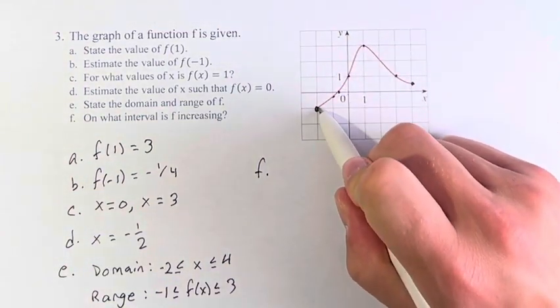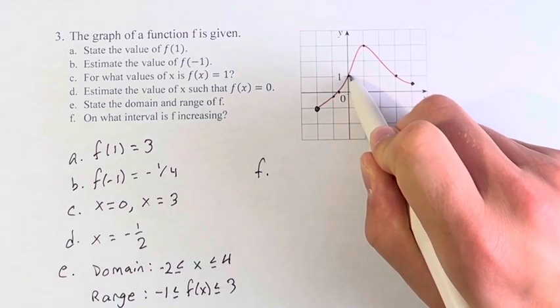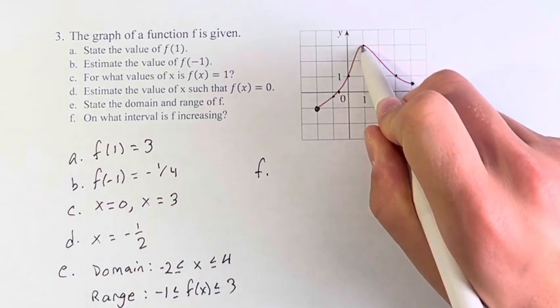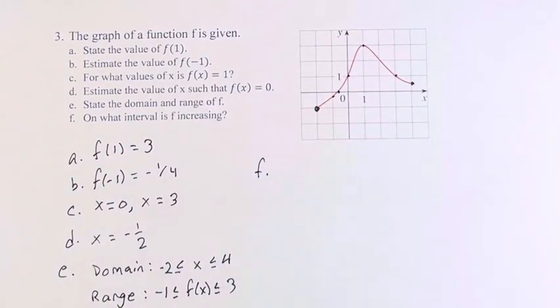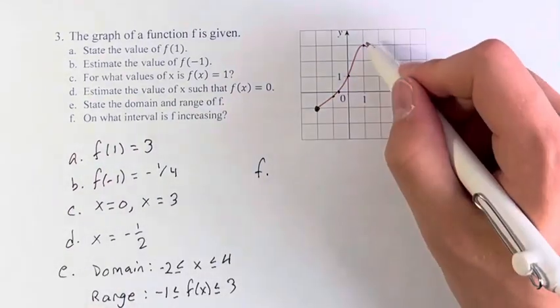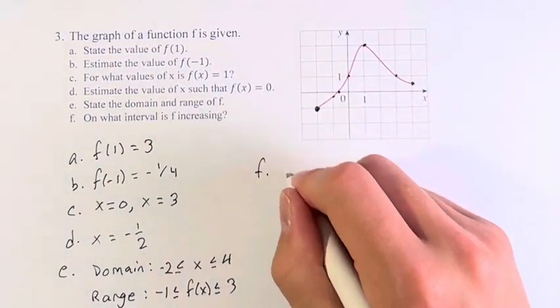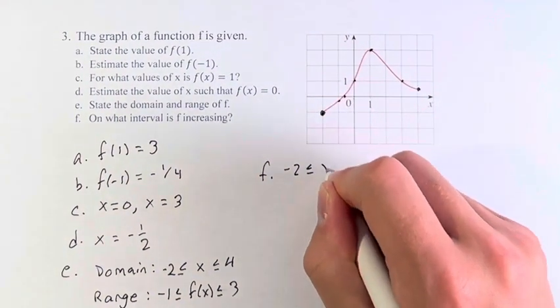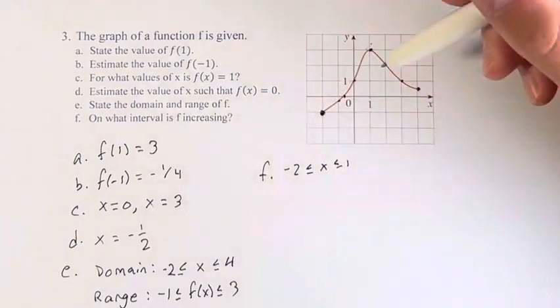As we move to the right, the function is getting larger and larger values, all the way up to this point. From here to here, we are increasing. We can say from -2 to 1 on that interval, -2 less than or equal to x less than or equal to 1, we're increasing.